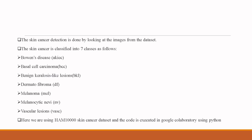Skin cancer detection is done by analyzing images from the dataset. Skin cancer is classified into seven classes: Bowen's disease, basal cell carcinoma, benign keratosis-like lesions, dermatofibroma, melanoma, melanocytic nevi, and vascular lesions. The HAM10000 skin cancer dataset is used, and the code is executed in Google Colab using Python.